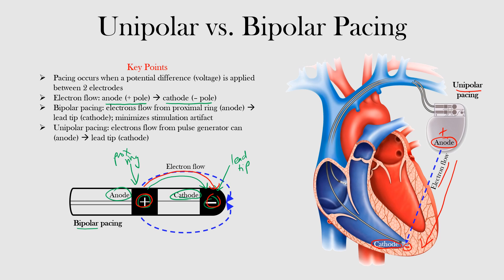The main thing to know is that the lead tip in both cases serves as the cathode, the negative pole, and electrons are heading towards that direction. As you can see, electrons have to travel a longer distance in unipolar pacing, and as a result, they require more energy to depolarize the myocardium.